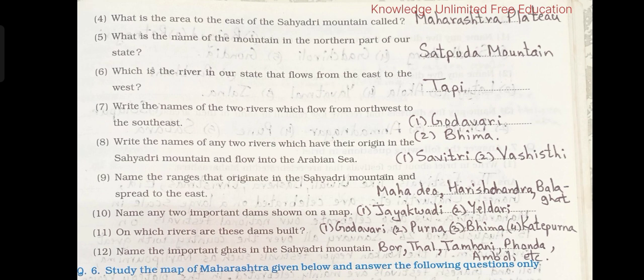10. Name any two important dams shown on the map. Jayakwadi and Yeldari. 11. On which rivers are these dams built? Godavari, Purna, Bhima, Katya Purna.